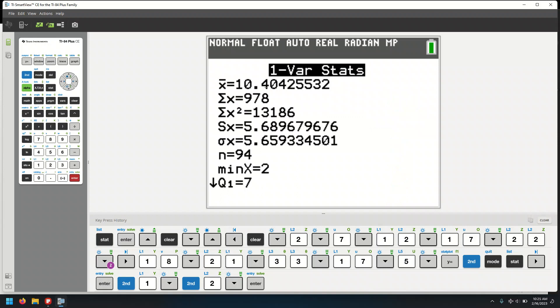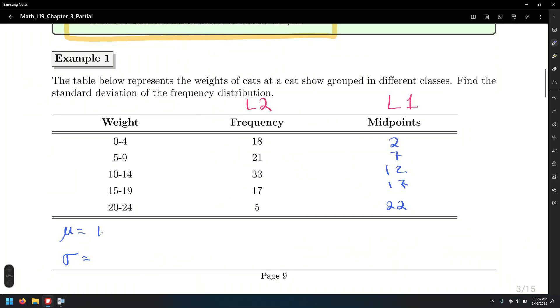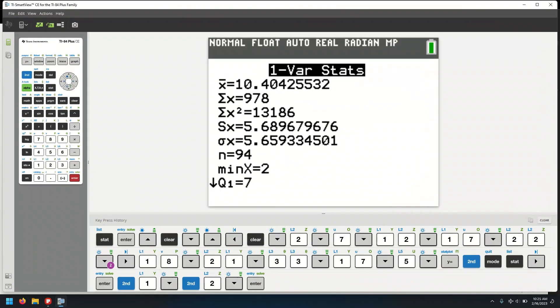And the mean is 10.4. I'm going to talk about the rounding rule, 10.4. And the standard deviation, which is the sigma one, that's going to be 5.66, no, 5.7.